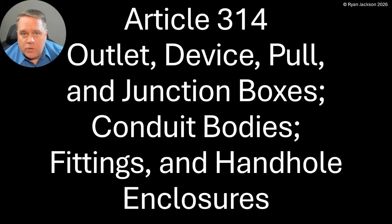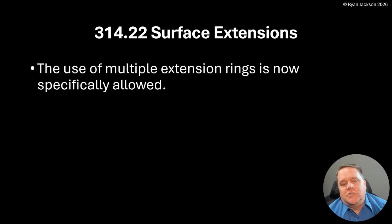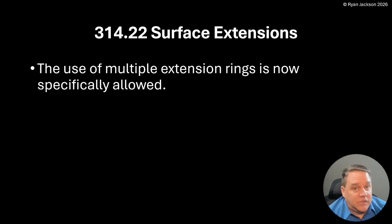They made a really nice clarification here. Truth be told, the rule is the same with or without the additions in the 2026, but it will reduce conflict and arguments in the field, and that's always worth doing. So let's take a look. Article 314 — outlet, device, pull, and junction boxes, conduit bodies, fittings, and handhold enclosures. Section 314.22: Surface Extensions. The use of multiple extension rings is now specifically allowed.